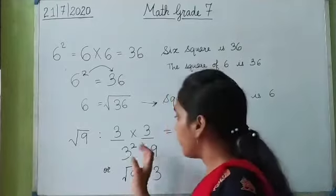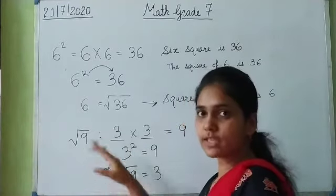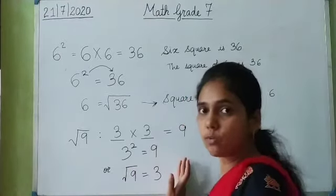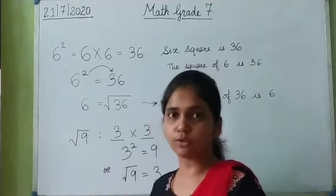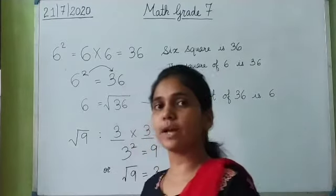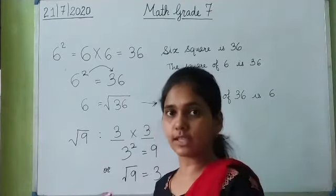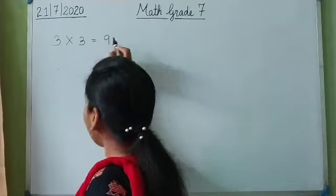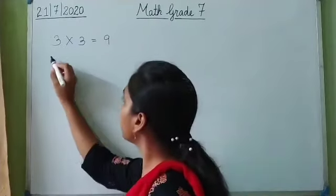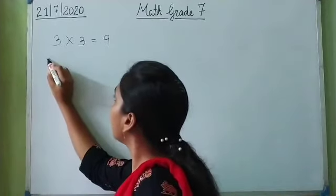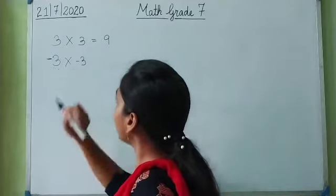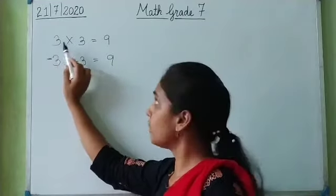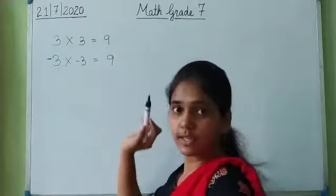So these are inverse operations. When the square sign goes from the left-hand side to the right-hand side, it becomes a square root. And if the square root sign goes from left to right, it becomes a square. Now, square and square roots can be negative also. 3 multiplied by 3 gives me 9, but similarly if I multiply minus 3 by minus 3, this also gives me 9.